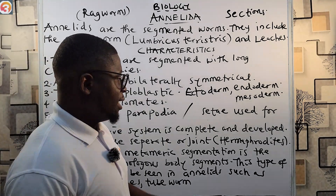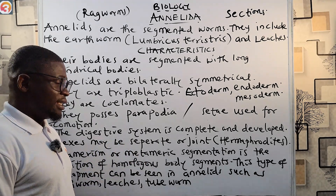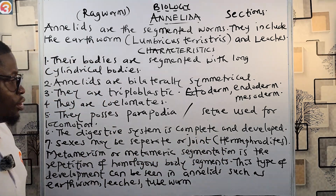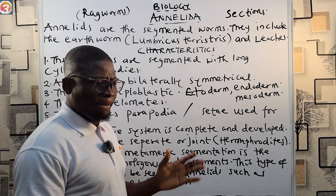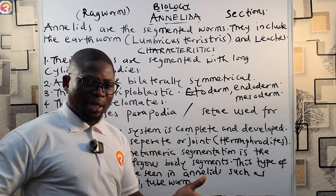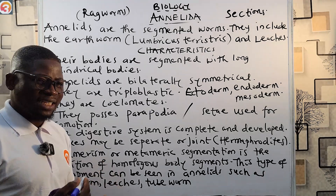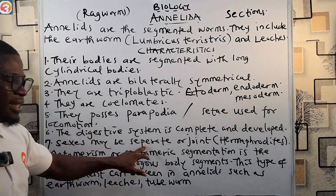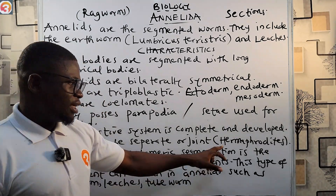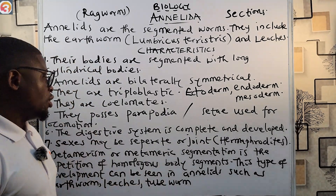Sexes may be separate — having distinct male and female individuals — or they can be hermaphrodite. During mating, earthworms line up inverted to each other and exchange sperm. So annelids may be dimorphic or hermaphroditic.